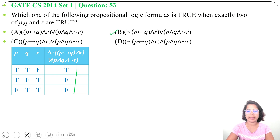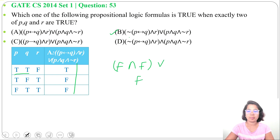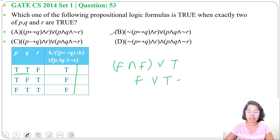Now check option B: negation of (P double implication Q) AND R, OR P AND Q AND negation of R. For P true, Q true, R false: P double implication Q is true, negation is false. False AND R — R is false — is false. OR P AND Q — true — and negation of R — R is false, negation is true — so it's true. False OR true is true.